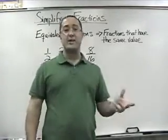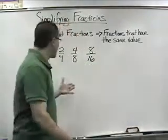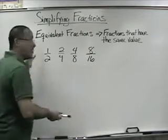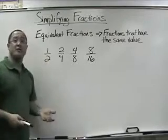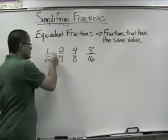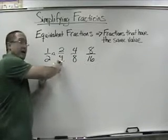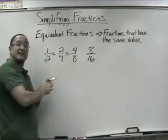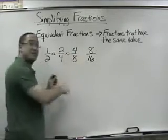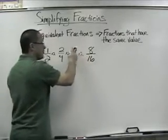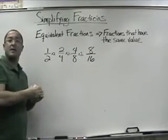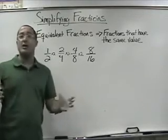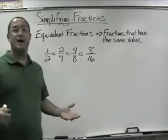Let's talk about how to make equivalent fractions by multiplying. These are the same fractions: one half, two fourths, four eighths, eight sixteenths. How do I change one half to two fourths? I multiply by two — one times two is two, two times two is four. How did I turn two fourths into four eighths? Multiply by two. And four eighths to eight sixteenths? Multiply by two. To make an equivalent fraction, just pick a number and multiply both parts of the fraction by that same number.